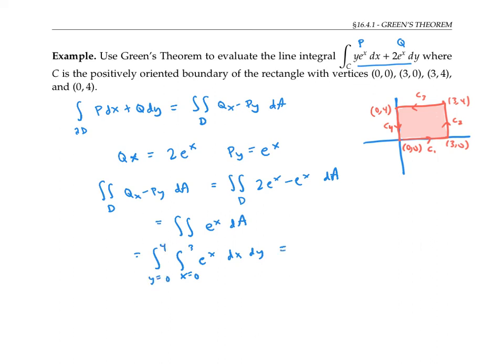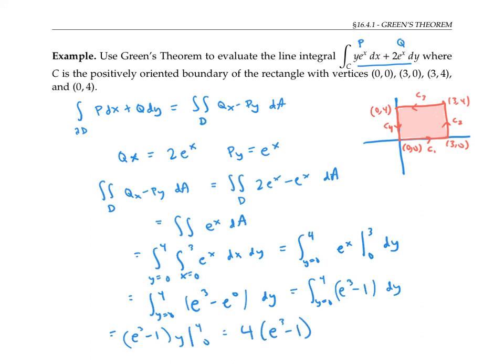So I'll compute with respect to x first. The integral of e^x is e^x evaluated between 0 and 3. That gives me the integral of e³ - e⁰, so that's going to be the integral of e³ - 1 dy. Integrating that I get (e³ - 1)·y between 4 and 0. And so my answer is 4(e³ - 1).